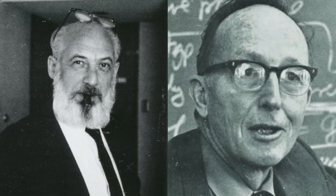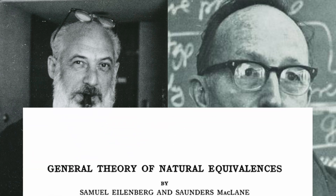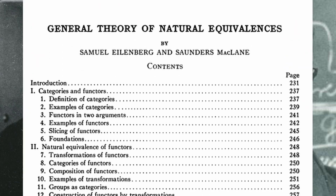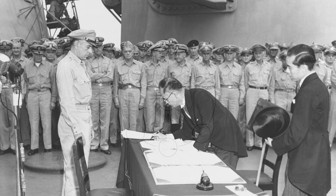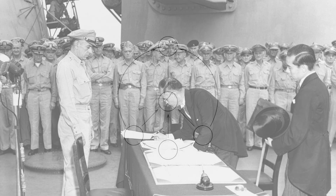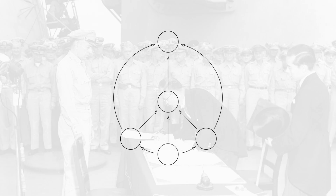Fact 4: Category theory was invented by American mathematicians Samuel Eilenberg and Saunders Mac Lane, and officially appeared in mathematical literature for the first time in September 1945, coinciding exactly with the formal end of World War II. Category theory has been keeping the world safe from global conflicts ever since.